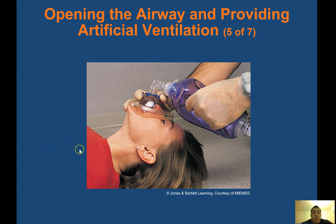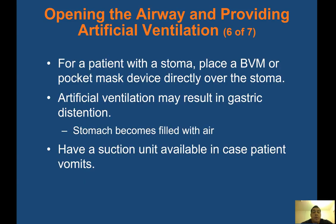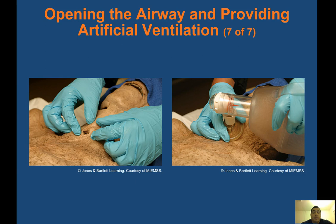Squeeze the bag over one second and confirm equal chest rise and fall. For a patient with a stoma, place the BVM or pocket mask directly over the stoma. Artificial ventilation may result in gastric distension — the stomach fills with air — so avoid giving too many breaths too fast or too forcefully. Have a suction unit available in case the patient vomits. If the patient has a trach tube, you can remove the mask and connect the BVM directly to the tube.